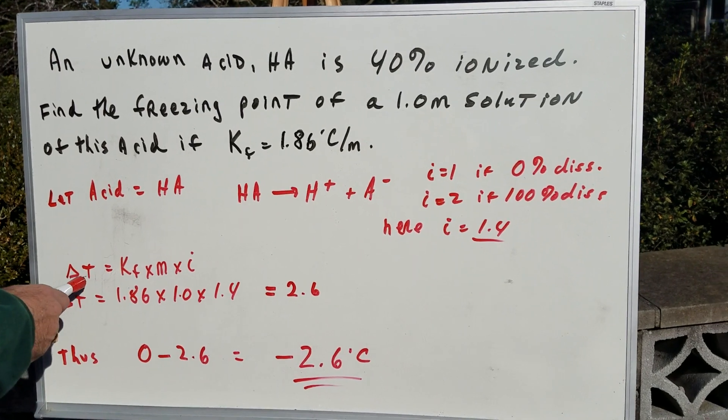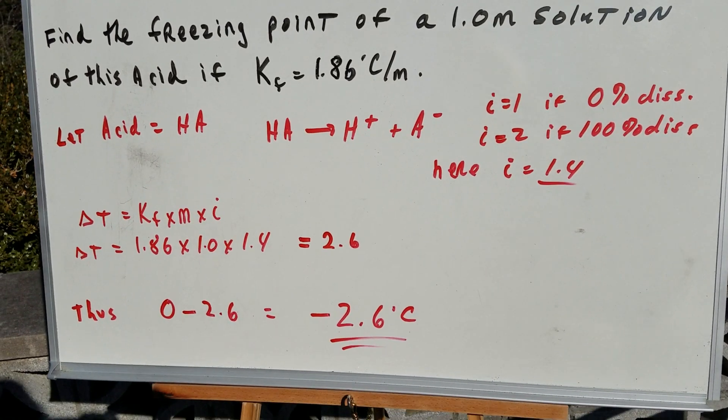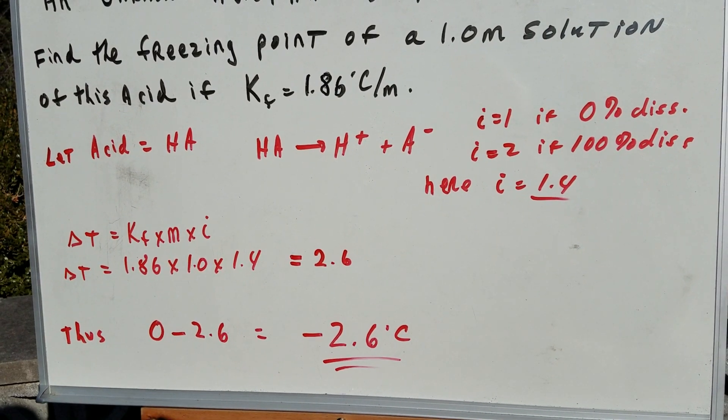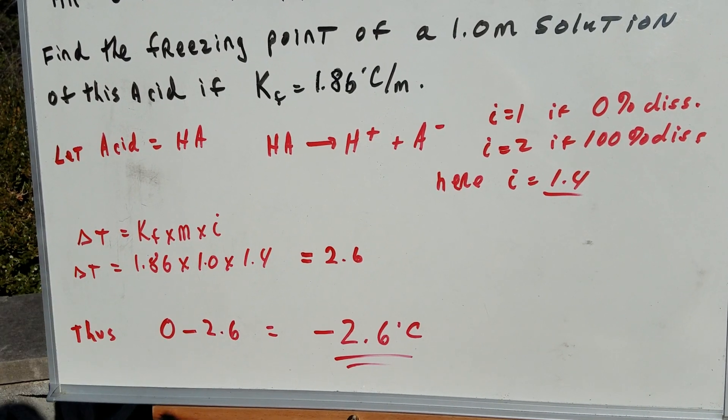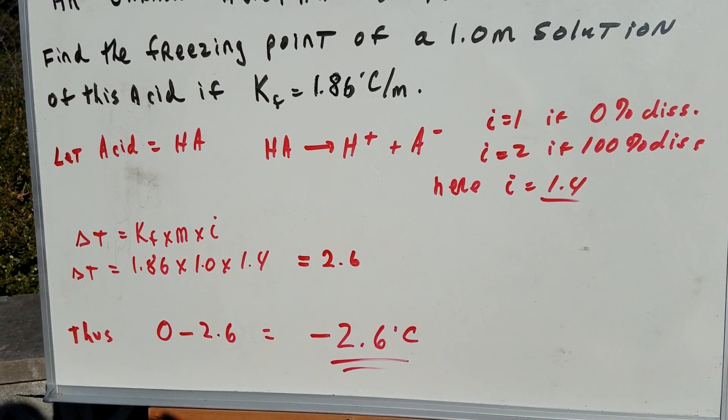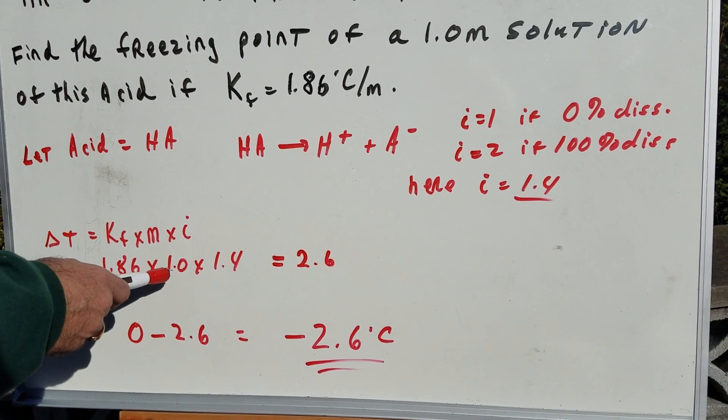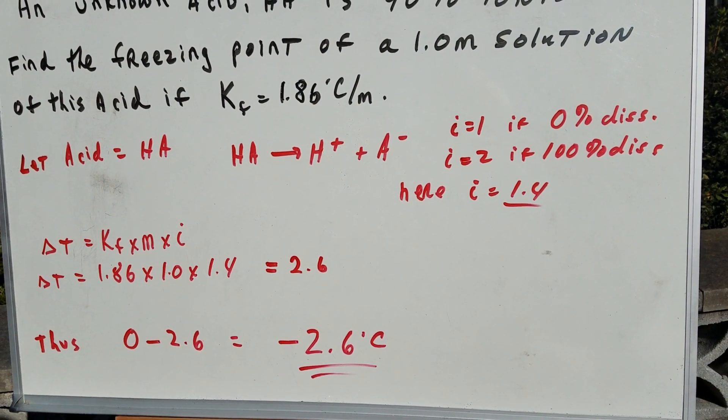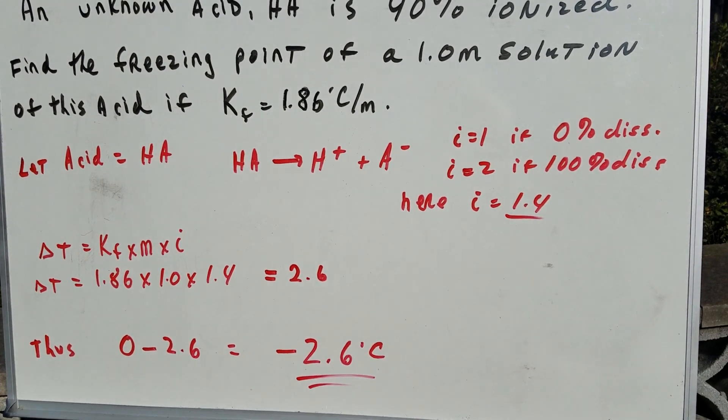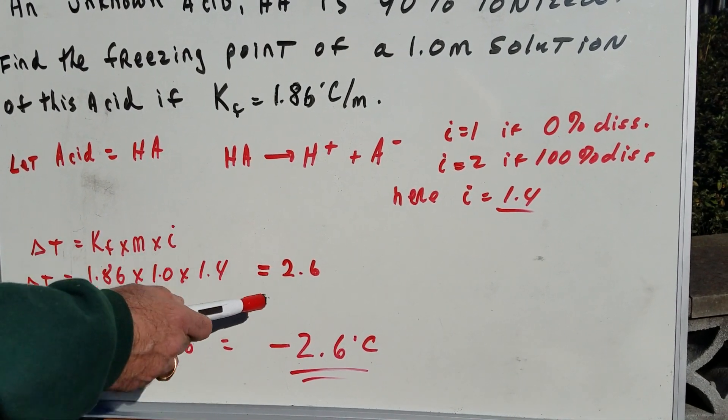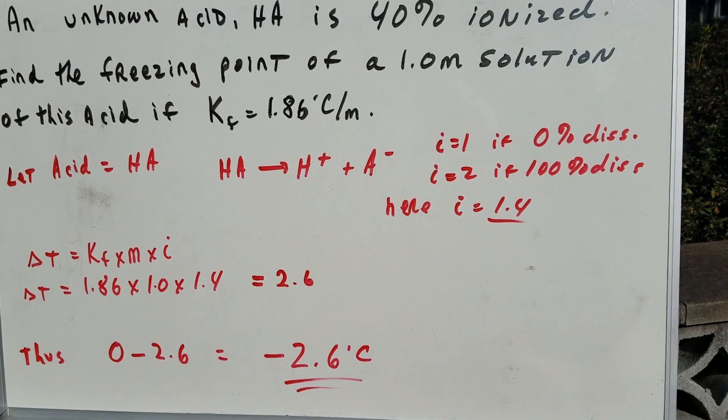That's the trick. So all we do is we take the freezing point formula, delta T equals KF times m times i. We know what the freezing point, which is the cryoscopic constant, it's 1.86. The molality is 1.0. The Van't Hoff factor is 1.4. Very simple arithmetic gives me the change in temperature of 2.6.